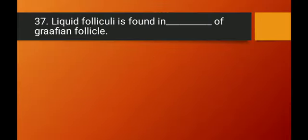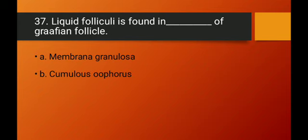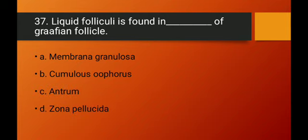Question number thirty-seven: liquor folliculi is found in which part of the Graafian follicle? Liquor folliculi is the fluid found in the antrum — the cavity present within the Graafian follicle. Membrana granulosa and cumulus oophorus are other structures; zona pellicida is the acellular covering of the secondary oocyte. Option C — antrum — is the right answer.